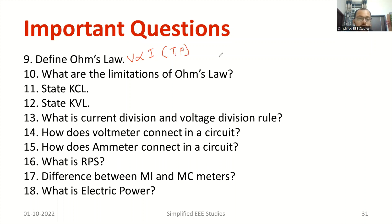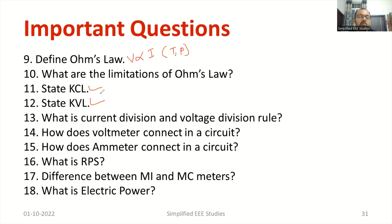What are the drawbacks of Ohm's law? It is not suitable for insulators and semiconductors. You also have to explain what is KCL: at a particular junction, the algebraic sum of currents meeting at a node or junction is equal to zero, or equivalently, the sum of incoming current equals the outgoing current. What do you mean by KVL? KVL is applicable for a closed loop — in a closed loop, the algebraic sum of voltage drops and the EMF will be equal to zero.